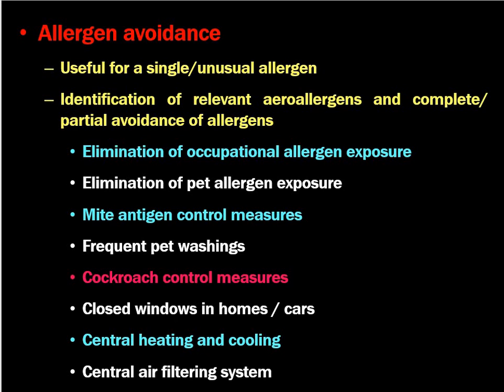The person has to identify relevant allergens and either completely or partially avoid them. It is important for the patient to identify what causes the allergy for them — like elimination of occupational allergen exposure. When the patient has certain allergy related to their occupation, they have to stop that exposure — like in the flour industry, some flowers, or latex. Elimination of pet allergens exposure is very important; if there are certain pets in the house, they have to avoid pet dander exposure.